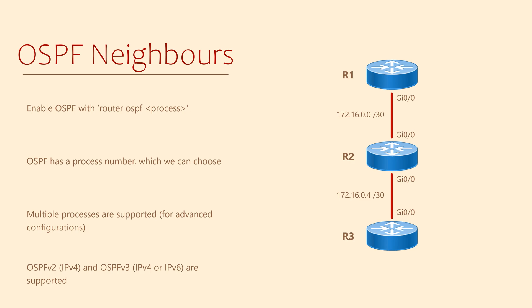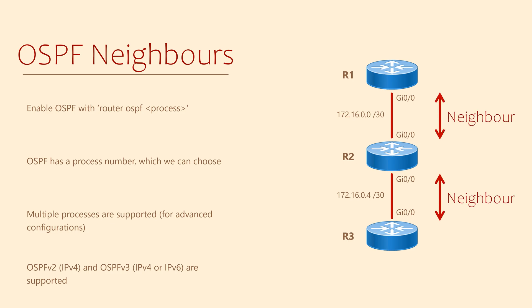As a dynamic routing protocol, OSPF discovers other routers that also run OSPF. The only catch is they all have to be adjacent, meaning they need to connect to each other directly from a layer 3 perspective. In the topology here, R1 connects to R2 — these routers are adjacent, so they can become neighbors. It's the same with R2 and R3. R1 and R3 are not adjacent as they are not connected to each other, so R1 and R3 do not become neighbors.